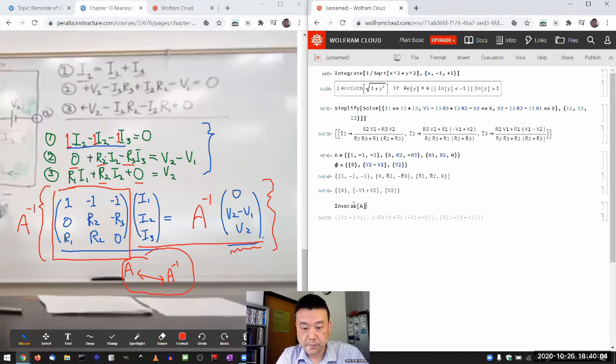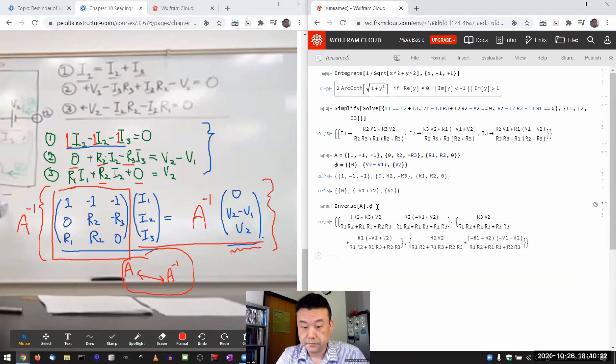So I'm going to take inverse of A, the thing will do that for me, times matrix multiplication, the column vector, that's the thing on the right hand side. Then the resulting column vector, the first element should be I1, second I2, third I3.